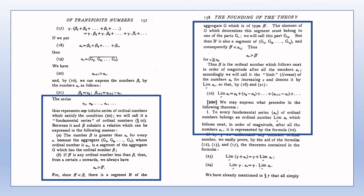Recall that the limit of a fundamental series, when it exists, is unique. That β is the ordinal number next in order of magnitude after all of the αs is guaranteed by the fact that if β′ < β, then αᵥ > β′ for all ν ≥ ν₀ for some ν₀. The formula in point 22 is obtained by replacing each of the betas in point 16 with the appropriate expression in terms of alphas as defined in point 21.